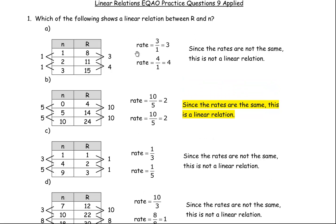To determine if there's a linear relation, check and see if the rate is the same as you go from ordered pair to ordered pair or from row to row in the table.